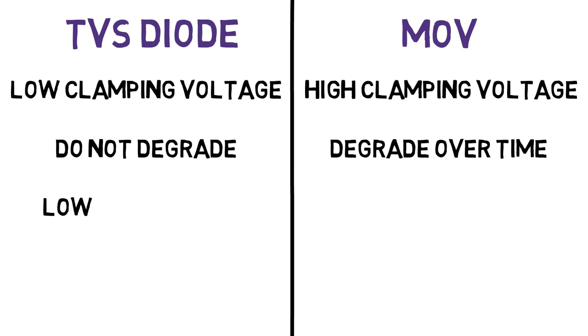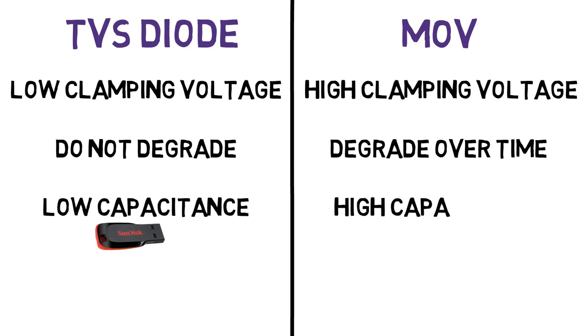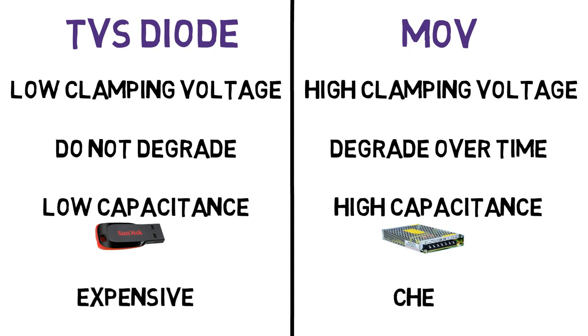The TVS diodes have lower capacitance allowing it to be used where signal sensitivity is very important, say in the USBs, where MOVs have higher capacitance and have higher energy as well as temperature tolerance. Hence, those can be used in high voltage applications. TVS diodes are more expensive than MOVs.